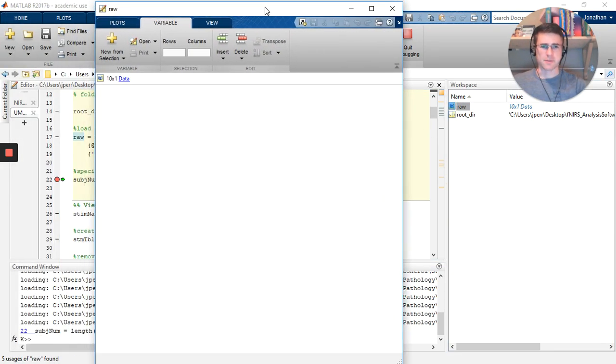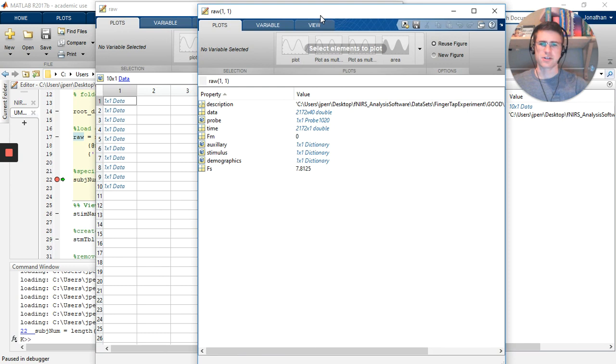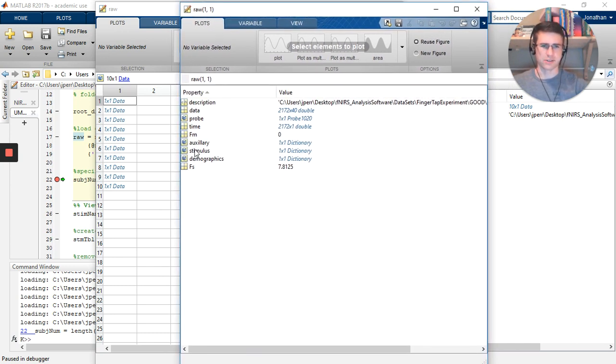In most experiments, you're going to have some sort of task happening, especially if it's a block paradigm, for some set duration. When you load in data, you can find this duration with a default value. In your raw data, you select one of your subjects. I have subjects 1 through 10. Each subject will have a stimulus subvariable.